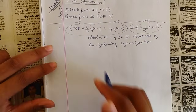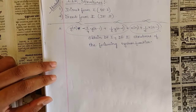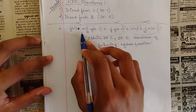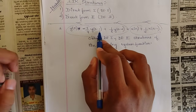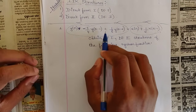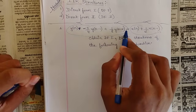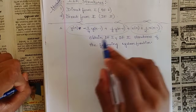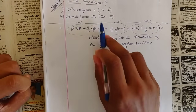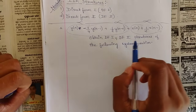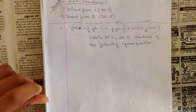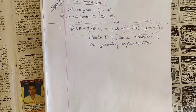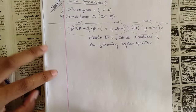Here is the problem: the system function given is Y(n) - (3/4)Y(n-1) + (1/8)Y(n-2) = X(n) + (1/2)X(n-1). We need to obtain both the Direct Form 1 (DF1) and Direct Form 2 (DF2) structures of this system function.